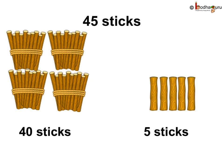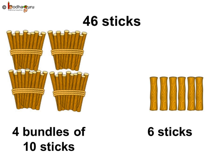So 45 sticks means 4 bundles of 10 sticks and 5 sticks. 4 bundles of 10 sticks and 6 sticks is 40, 41, 42, 43, 44, 45, 46.